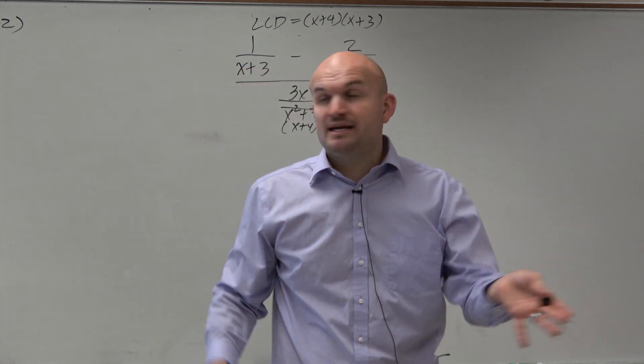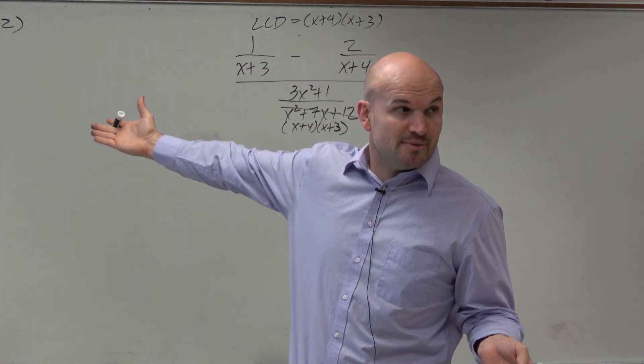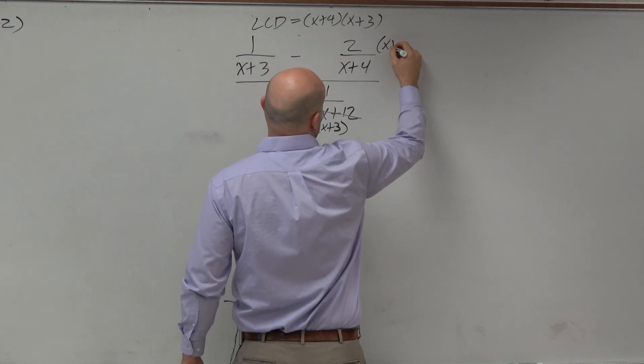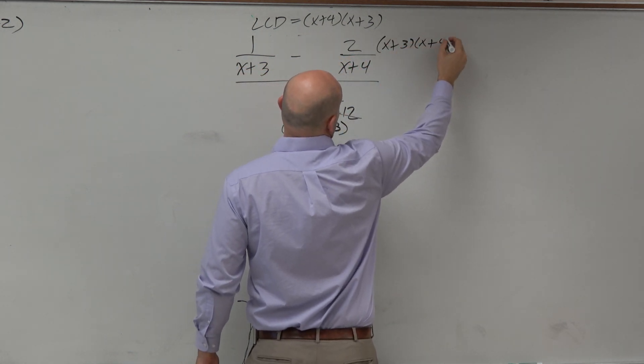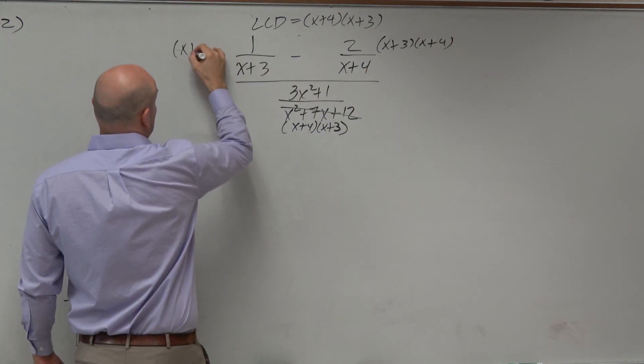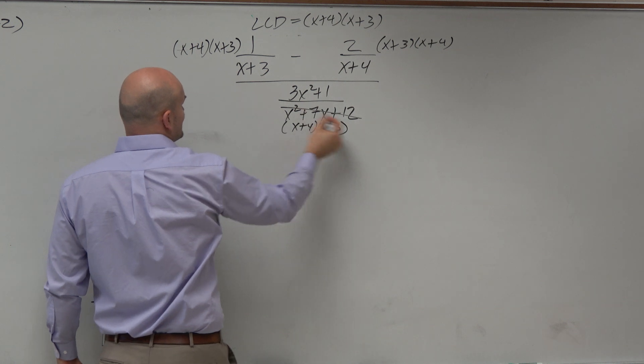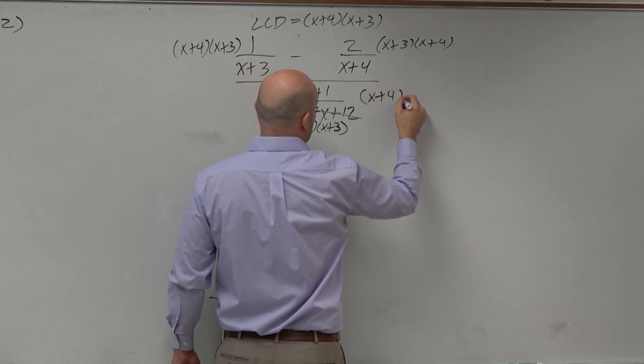So to avoid making the mistake, like some students did by using brackets, I'm just going to write out x plus 4 times x plus 3 times every single expression. It only takes me a little bit more work, but it's easier for me to visualize and see what is being divided out and what is remaining.